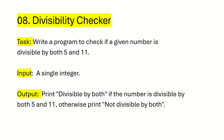Let's understand the question first. Divisibility Checker Bot. The task is: write a program to check if a given number is divisible by both 5 and 11. Input is a single integer, and the output should show in a message box 'divisible by both' if the number is divisible by both 5 and 11, otherwise 'not divisible by both'.